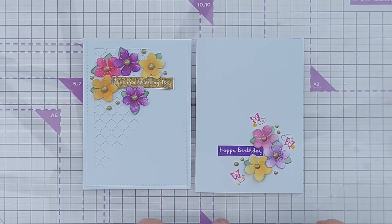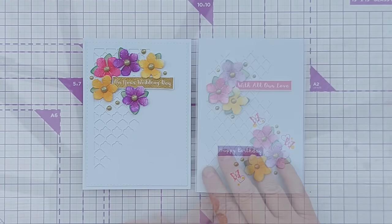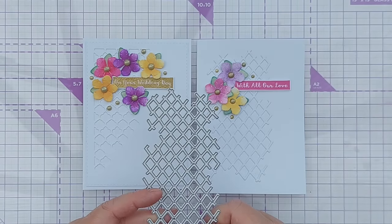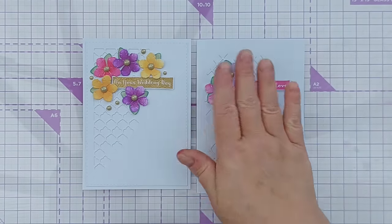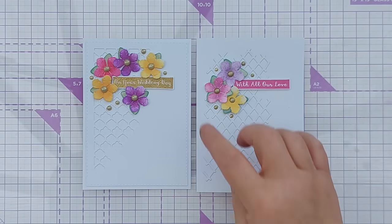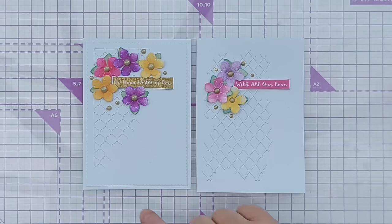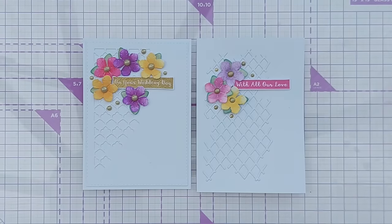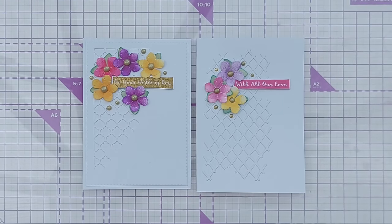For card number three, I added texture using this net die. Looks a bit like trellis, so I thought it went well with the flowers. I didn't add a panel. I think it does need a bit of a panel. I like the border that you get with a panel and I'm really loving, you might have noticed, the stitched rectangle panels. But anyway, I die cut this from white cardstock and stuck it on, added my flowers, and then stamped 'With All Our Love' in Picked Raspberry.